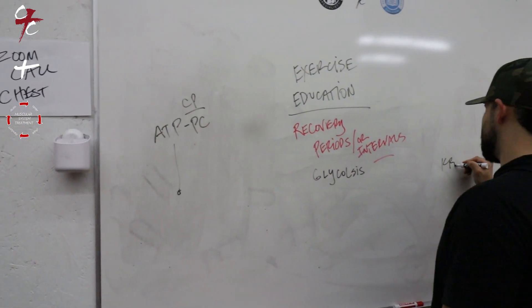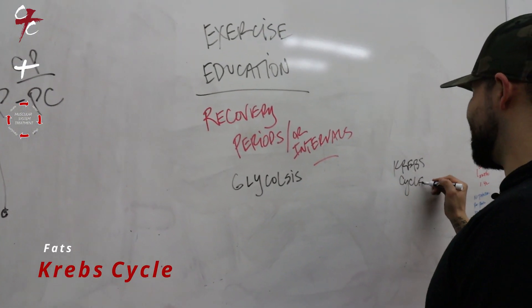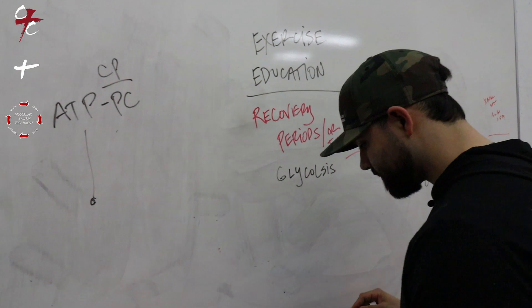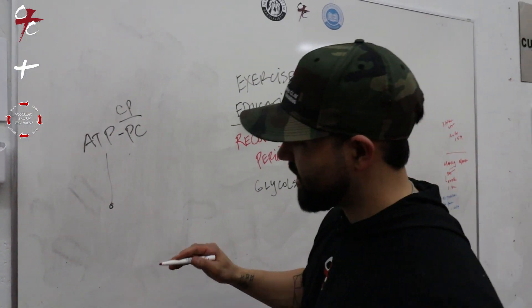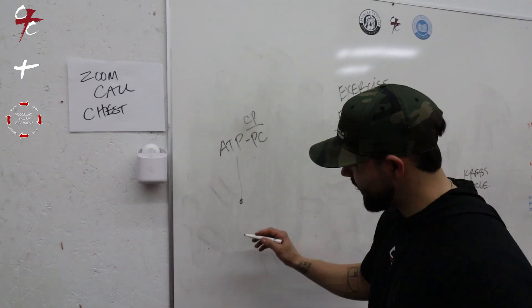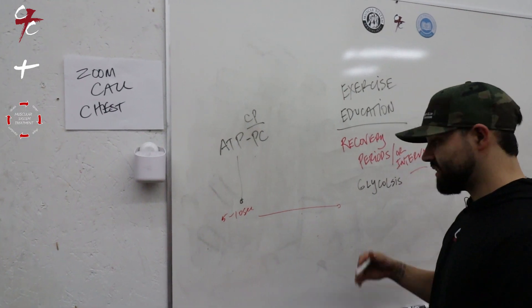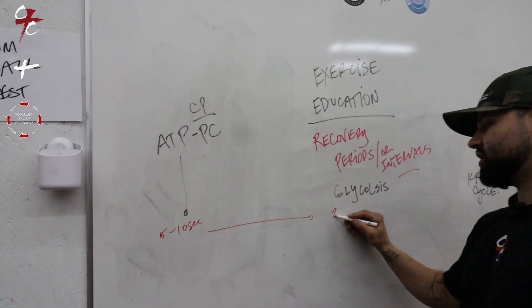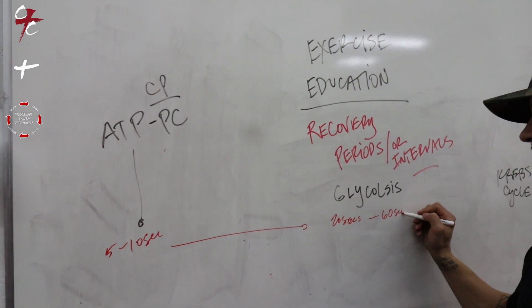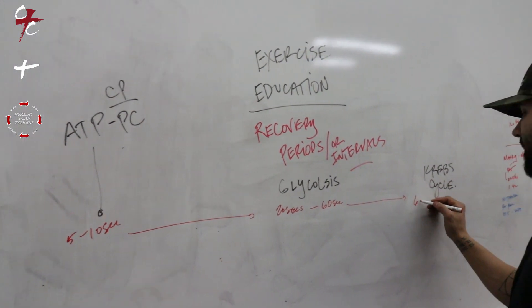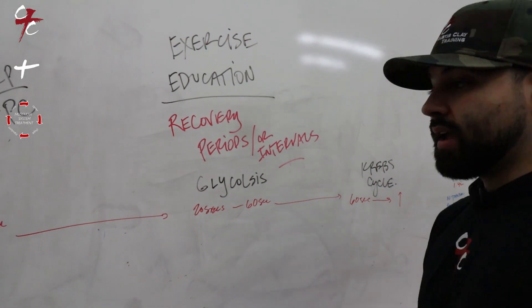ATP-PC is like the initial part of a lift, about five to ten seconds of the lift. The longer the lift gets, say around twenty seconds, that's glycolysis. Glycolysis is around sixty seconds, and Krebs cycle is sixty seconds and up.